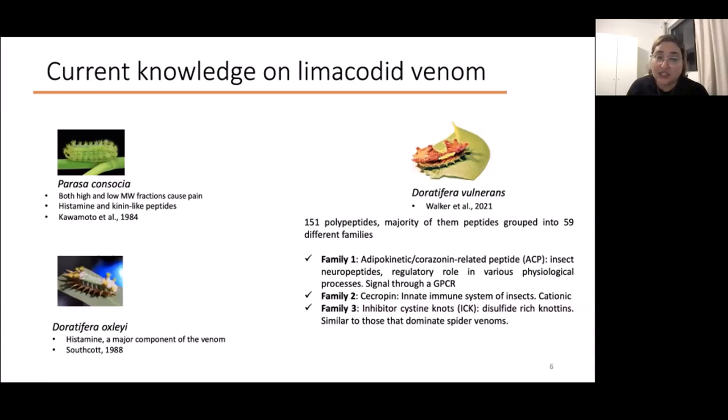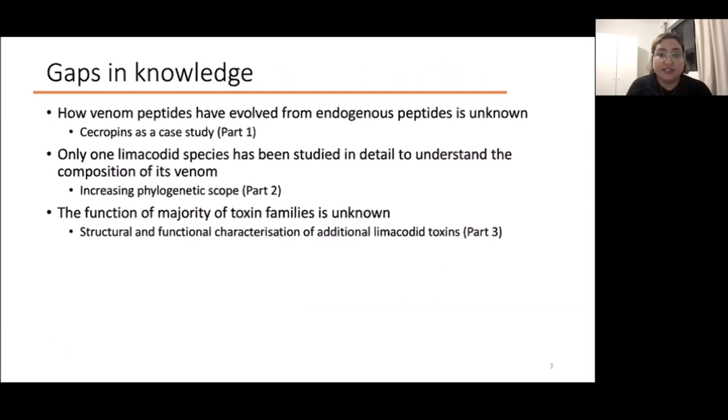There are some gaps in our knowledge. We don't know how venom peptides have evolved from the endogenous peptides like sacropine-like peptide. We only know one Limacodidae species that has been studied in detail to understand the composition of their venom. The function of the majority of toxin families is unknown. So this is where my PhD comes in. My overall aim is to expand the knowledge on the structure, function, and evolution of limacodid venom toxins, and potentially find novel peptides that might be useful therapeutics. Today I'm going to focus on these two parts, the first two.